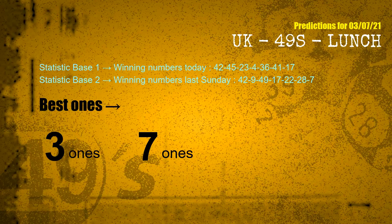According to the statistics above, with winning numbers today — 42, 45, 23, 04, 36, 41, 17 — and winning numbers last Sunday — 42, 09, 49, 17, 22, 28, 07 — the most frequent following units digits are 3 and 7.